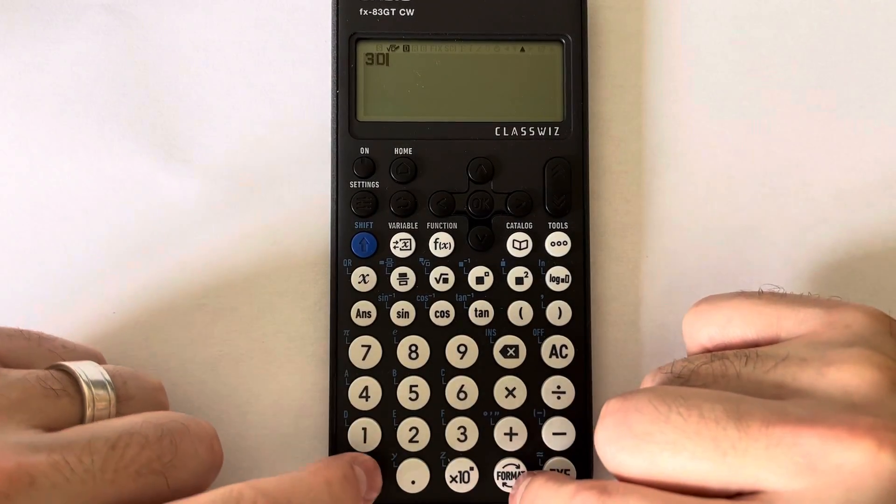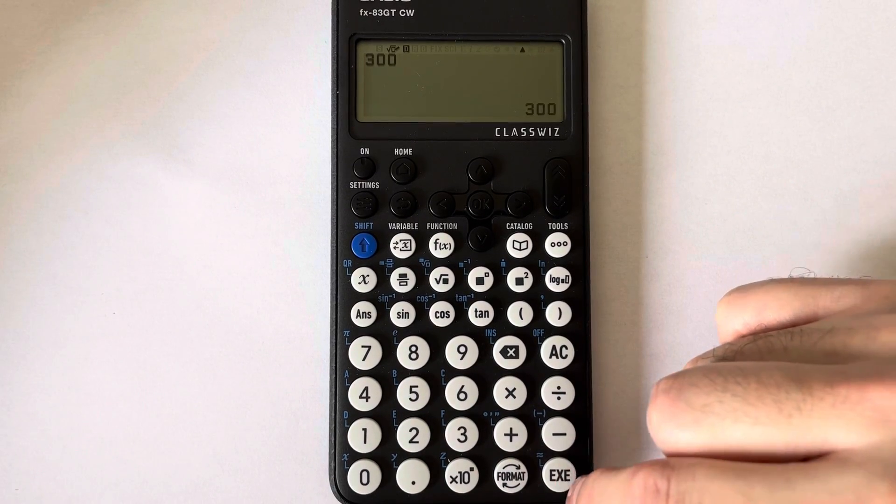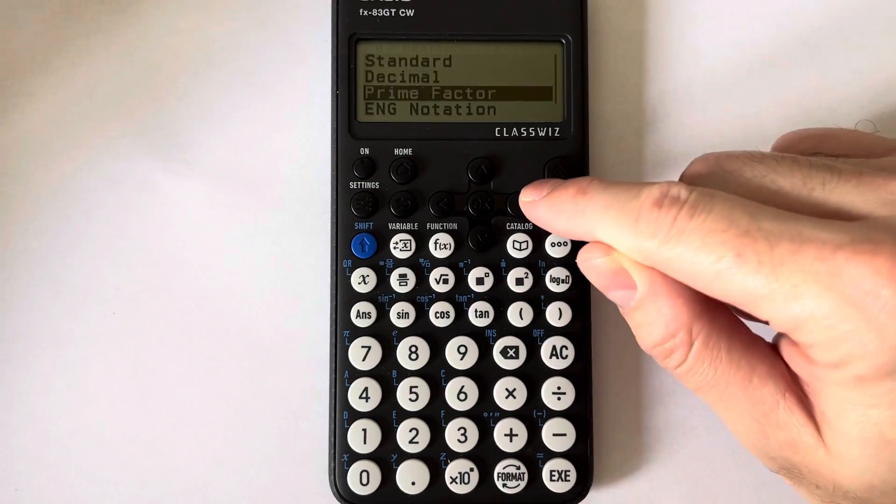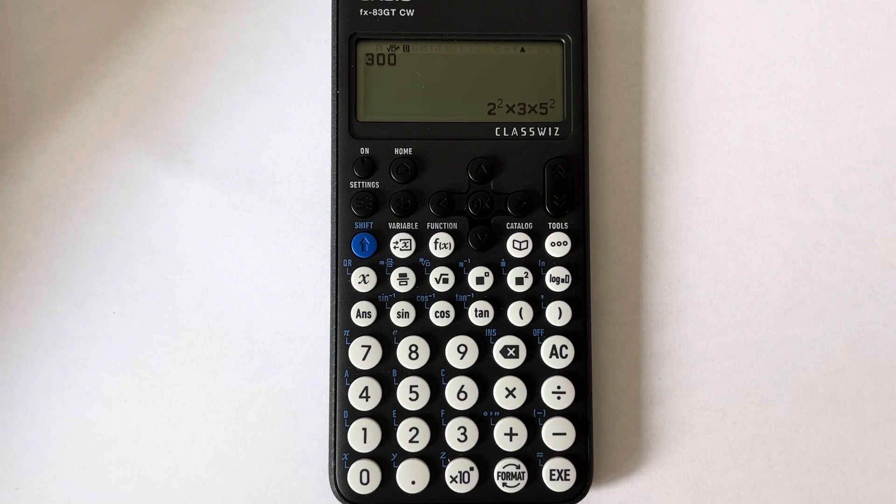Type in 300, then press equals, then format, scroll down to prime factor, press the execute key, and we get 2 squared times 3 times 5 squared.